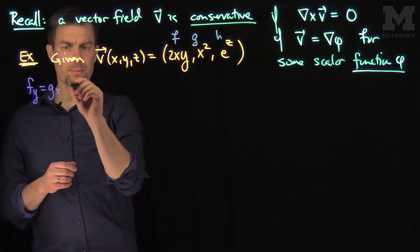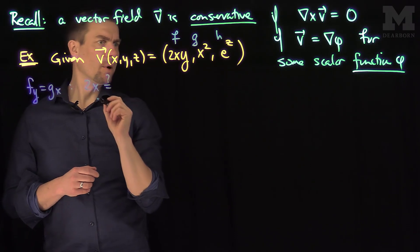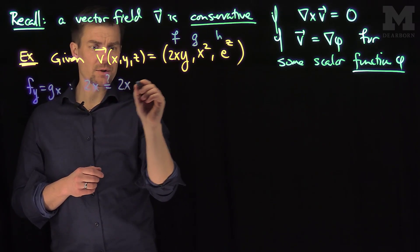Well, partial F partial Y in this example is 2X. Partial G partial X is 2X. So that works.